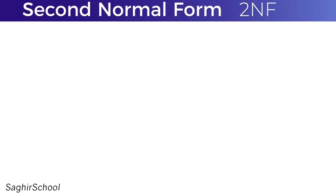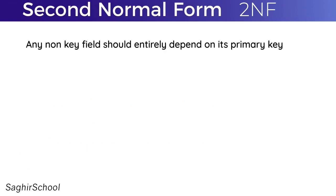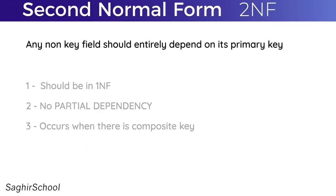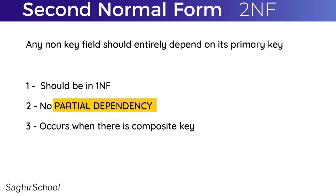For a table to be in Second Normal Form, it must satisfy three things: it should already be in First Normal Form, have no partial dependency, and partial dependency can only occur when there is a composite key. A composite key is when there is more than one primary key column.